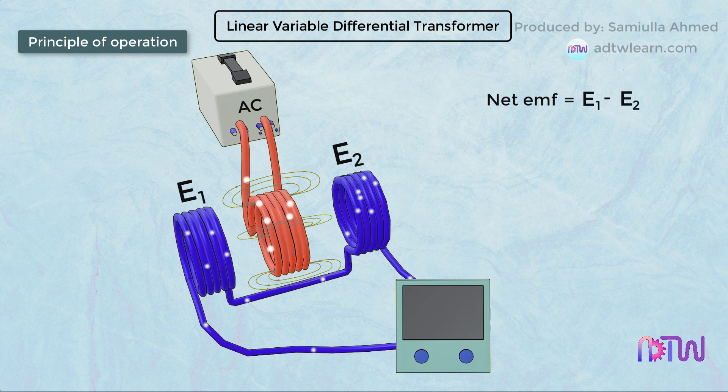Thus the net EMF will be equal to E1 minus E2, since the coils are wound opposite to each other. This is the basic working principle of LVDT.